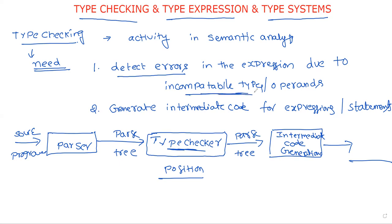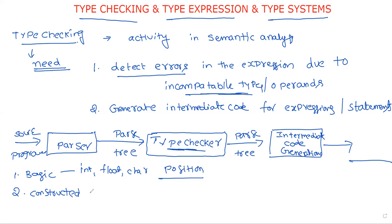Incompatible operands are operands between different data types. Generally we have two types of data types: one is basic data types and the second is constructed data types. Integer, float, char — all these are basic data types. Constructed data types are data types constructed from basic data types: arrays, structures, pointers, etc. This is the concept of type checking.